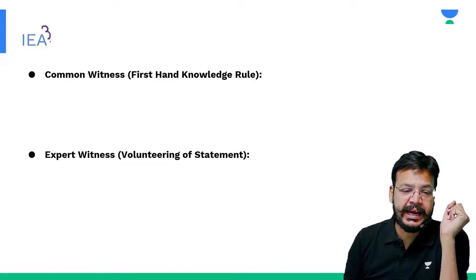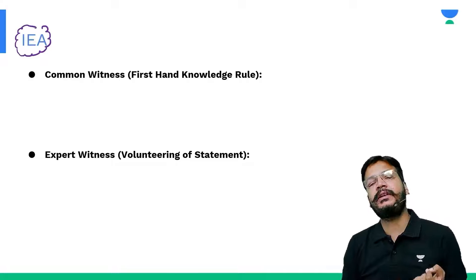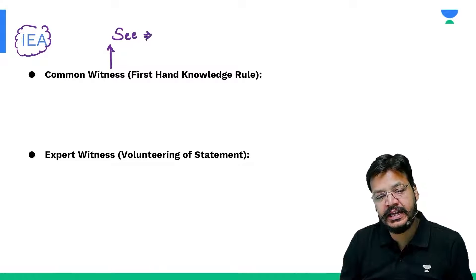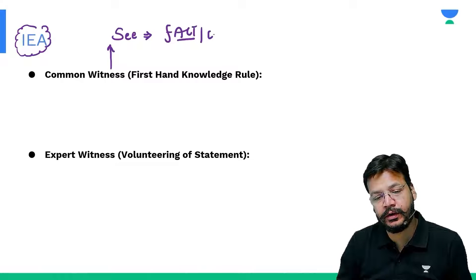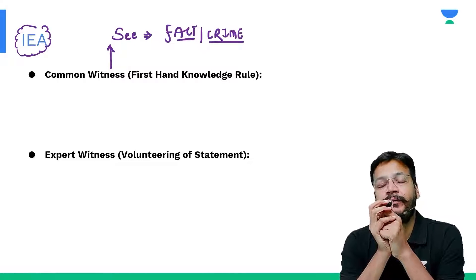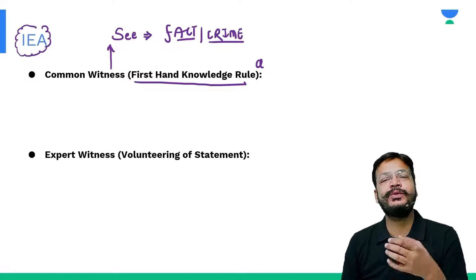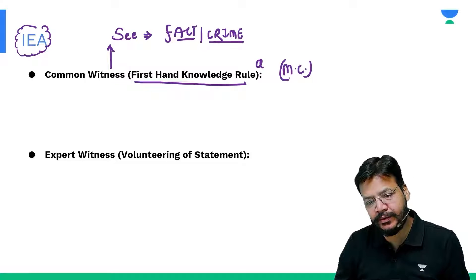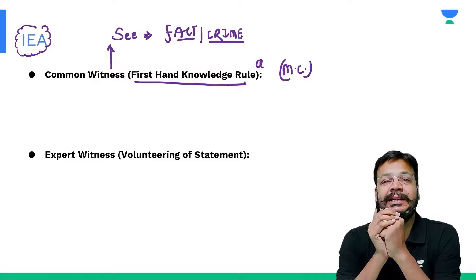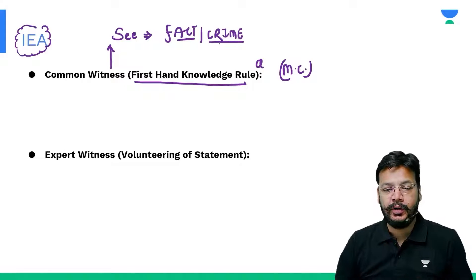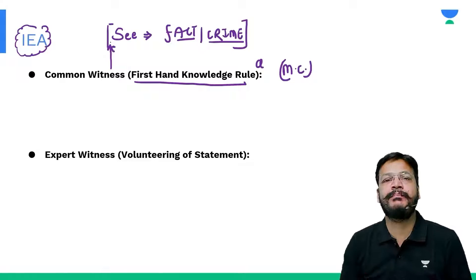IEA, Indian Evidence Act, is related with witnesses and evidences. First is a common witness. A common witness is a person who sees any fact or crime — who observes any fact or crime. This is the first-hand knowledge rule, which is used for the common witness. It is the most common type of witness. If I have seen a crime, I am a common witness.